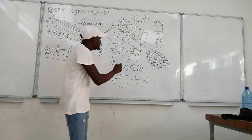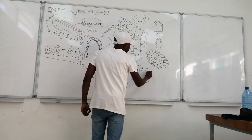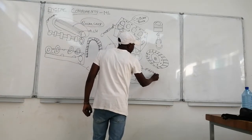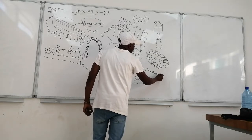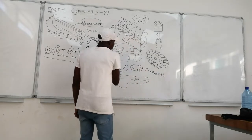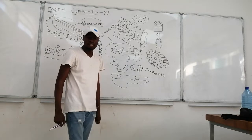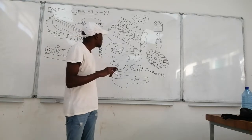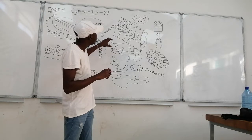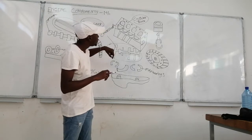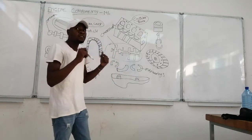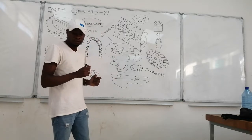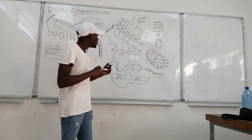We are going to the sixth component of our engine, which is the main bearings. The function of the main bearings is to ensure that when we connect the crankshaft with the pistons, everything moves smoothly.